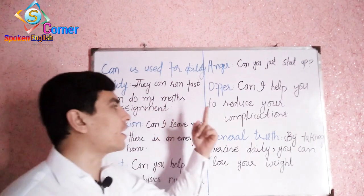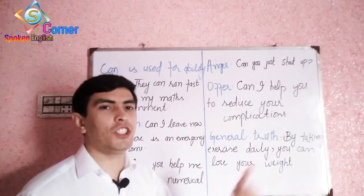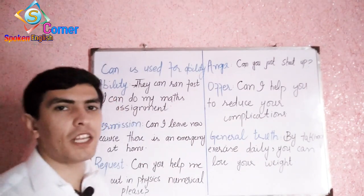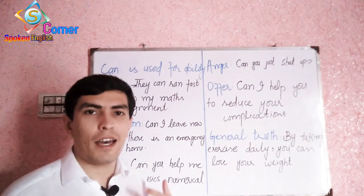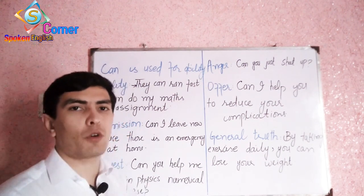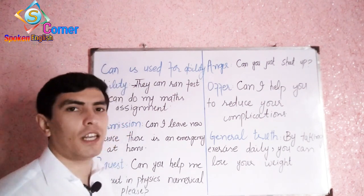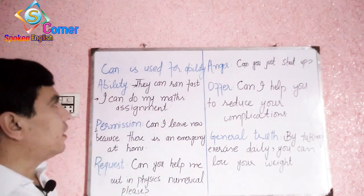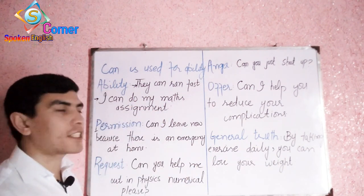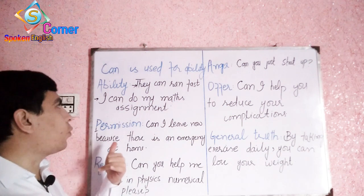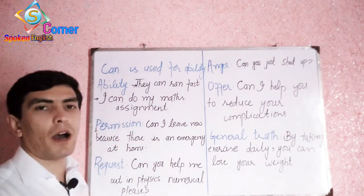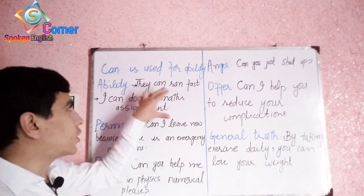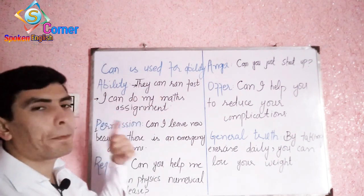First, I have started with ability. With the help of 'can' you can show your ability. For example: 'they can run fast,' and 'I can do my math assignment.' Both of these examples show the present ability of a person.